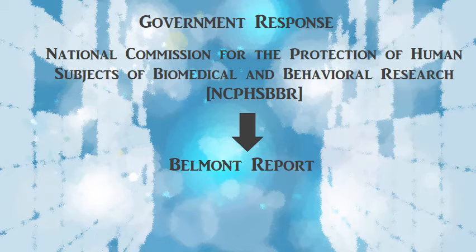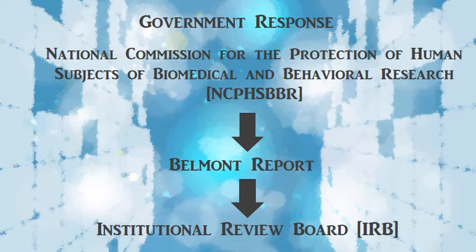The Belmont Report recommended that all institutions receiving federal funding establish Institutional Review Boards, or IRBs — boards that monitor and oversee research. If you want to do research, at pretty much every American university you have to get it approved by the IRB. You fill out an application indicating what you're going to do, why, how, and all the details of how you'll conduct your study.